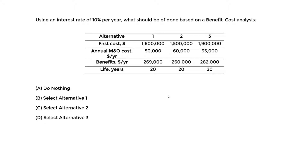Now let's begin with the example. With three alternatives the procedure takes a bit longer than with two, but the steps are the same. The first step is to rank the alternatives in terms of increasing initial investment — from least to largest.